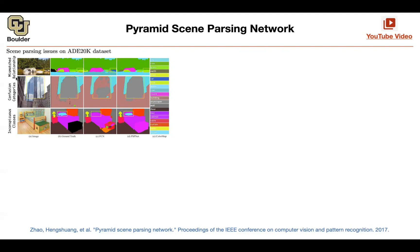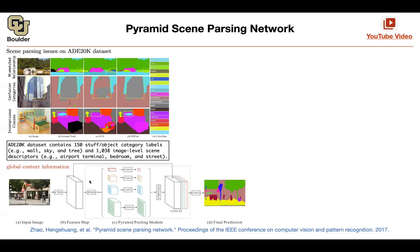There is also this mismatch relation. For instance, putting a car on the river, which shouldn't happen. It's because your neural network is not taking into account the global context of the picture.